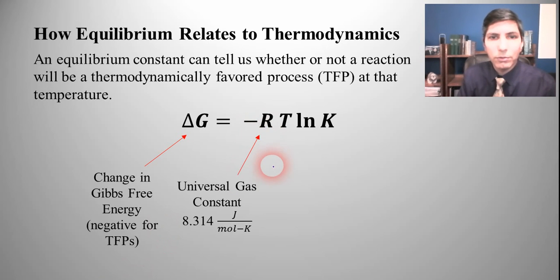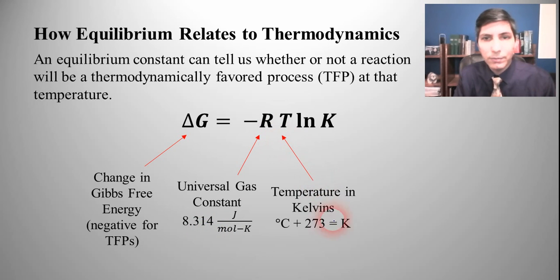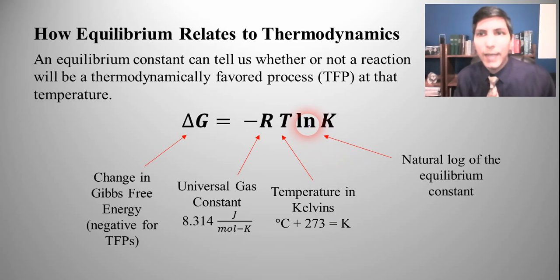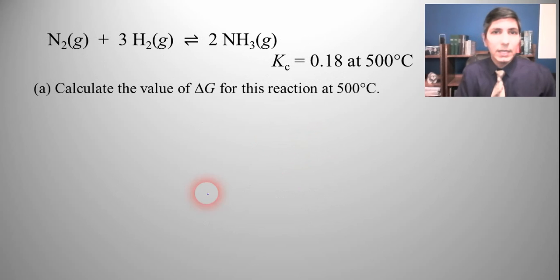The R is the universal gas constant. Don't be alarmed here because the number is different than it was in the last series of lessons. In the previous lesson, it was 0.0821 with liters and atmospheres. Well, here we have joules because we're trying to calculate delta G in joules. So it's 8.314 joules per mole Kelvin whenever we're looking at it in terms of joules. T is still temperature in kelvins, and K is your equilibrium constant. We have to take the natural log of that.